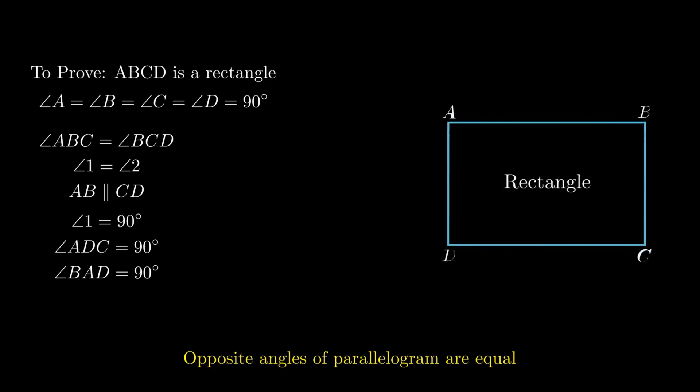Also, opposite angles of a parallelogram are equal, so angle ADC = angle ABC and angle BAD = angle BCD = 90 degrees. Hence the given parallelogram with equal diagonals is proved to be a rectangle.